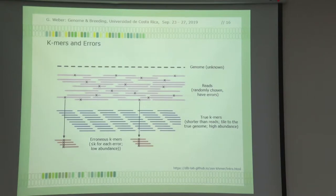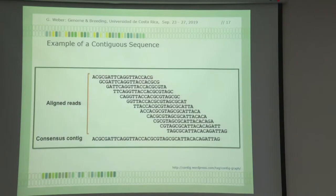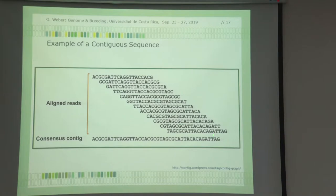What you want to get in the end is a nice contig. You pile all different sequence pieces on top of each other and get a consensus contig. You eliminate all the rare ones with low representation, keep those with good sequence coverage, tile them on top of each other, and get a consensus sequence — a contiguous sequence, a contig.